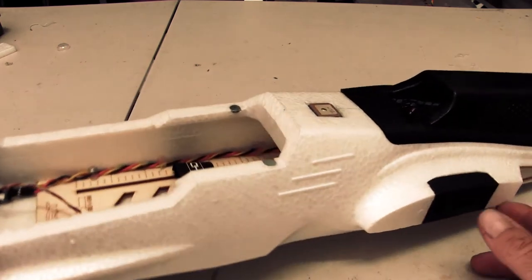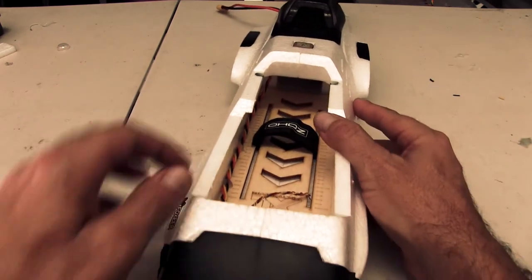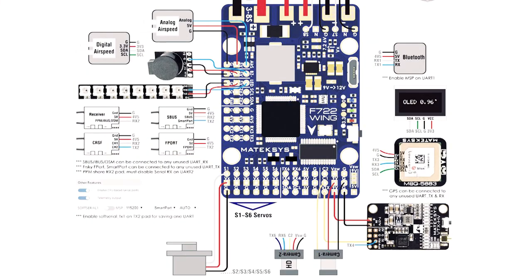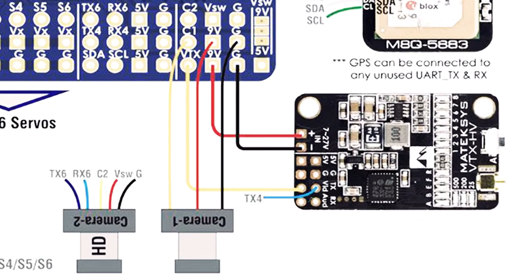But the first thing we want to do is to get the wiring sorted out for the Foxeer. So we'll go back to the website, Maytech website, the wiring diagram here. So the VTX pin, the 5 volt pin and the ground pin is what I've plugged the port in that the wing attaches to. And our camera one's going to go just above that, C1, 9 volt and ground. Sorry, it's 9 volt also for the VTX.